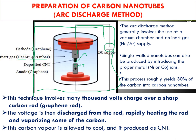The arc discharge method uses a combination of electrical energy and heat energy. This method generally produces only 30% yield — meaning if you put one gram of graphite rod, you get only 0.3 grams of carbon nanotubes. Also, this method only produces multi-wall carbon nanotubes. To prepare single-wall carbon nanotubes, you need a graphite rod that contains cobalt or nickel.